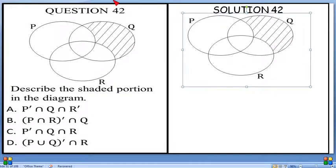And then pick a pen. The shaded portion here, it's inside the circle of Q, but it is not inside P, and it is not inside R.